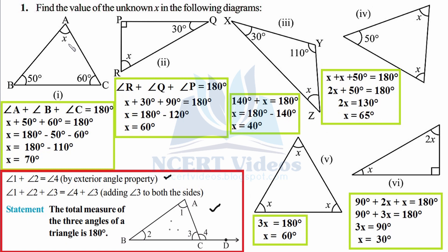Now we solve the questions. To find x, the three angles add up to 180 degrees: angle A is x, angle B is 50°, angle C is 60°. So x plus 50 plus 60 equals 180. Adding 50 and 60 gives 110; transposing: 180 minus 110 equals 70 degrees. So x equals 70 degrees, using the angle sum property of a triangle.